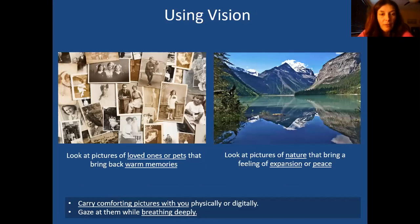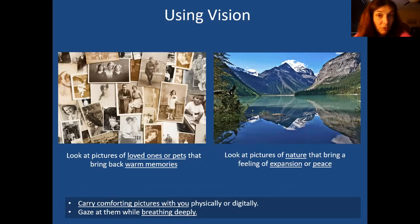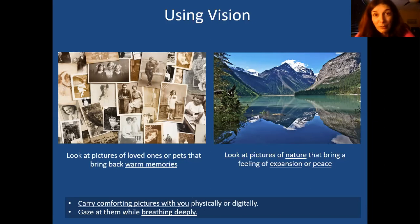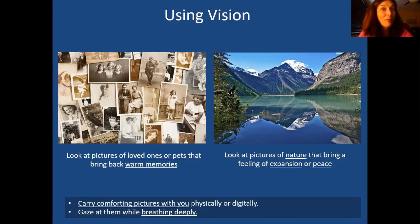Next is using vision. They suggest looking at pictures of people that are important to you and make you feel good - reminders of people in your life who care, or even people who have passed on who were important to you. You could have digital pictures on your phone or physical pictures in your wallet somewhere easily accessible. Even looking at pictures of nature or beautiful things can give you a nice feeling of peace. While looking at them, also breathe deeply - whatever calming you get from the vision can be accompanied by deep breathing for a double bonus.